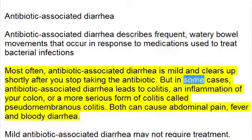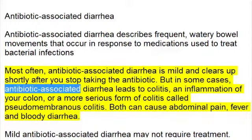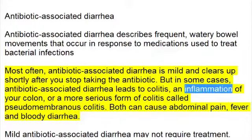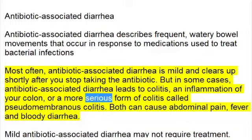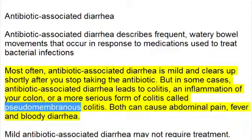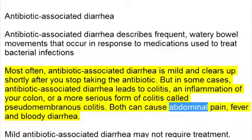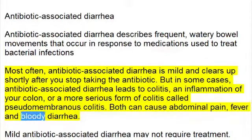But in some cases, antibiotic-associated diarrhea leads to colitis and inflammation of your colon, or a more serious form of colitis called pseudomembranous colitis. Both can cause abdominal pain, fever, and bloody diarrhea.